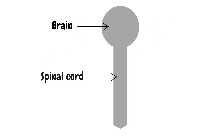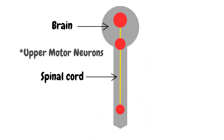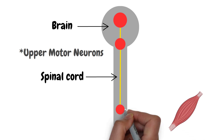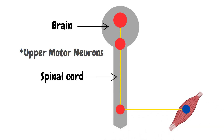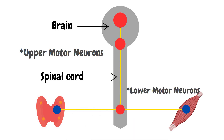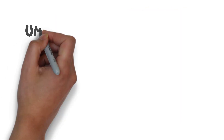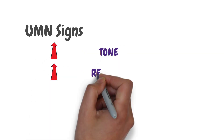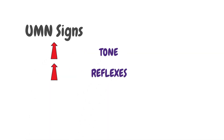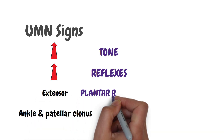Upper motor neurons run from the brain to the brain stem or spinal cord. Lower motor neurons begin in the spinal cord and go on to innervate muscles and glands of our body. Degeneration of upper motor neurons can lead to symptoms such as increased tone, increased reflexes, ankle and patella clonus, and extensor plantar response.